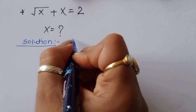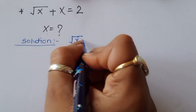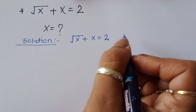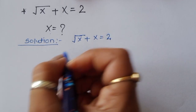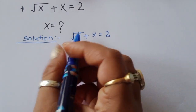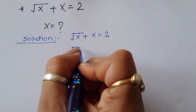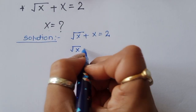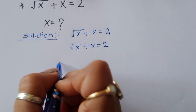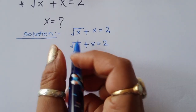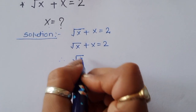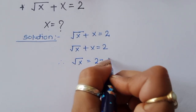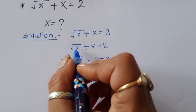√x + x = 2 is given. We can rearrange this: √x = 2 - x.